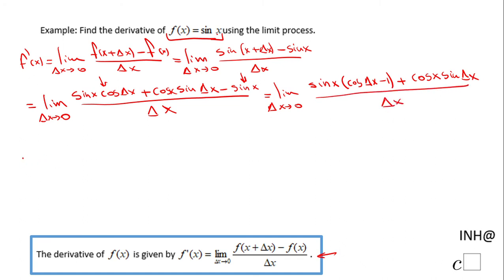And I can break this limit into two limits: limit when delta x approaches zero of sine of x times cosine delta x minus one over delta x, plus limit when delta x approaches zero of cosine x times sine of delta x over delta x.